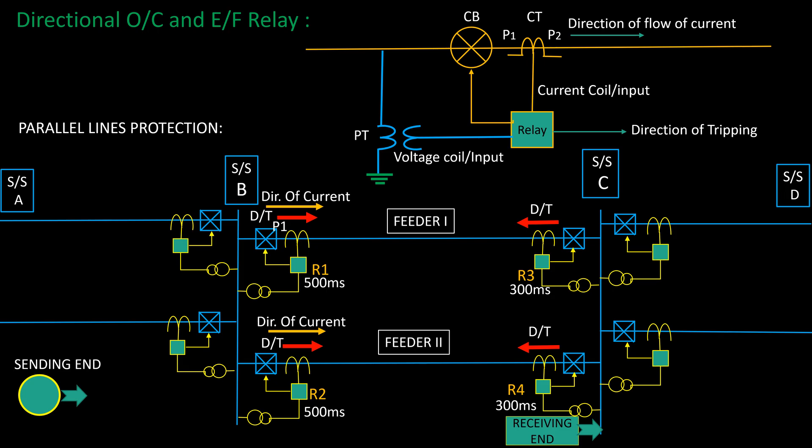In normal condition, relay R3 and R4 will not issue tripping due to overloading as direction of flow of current is opposite to direction of tripping.